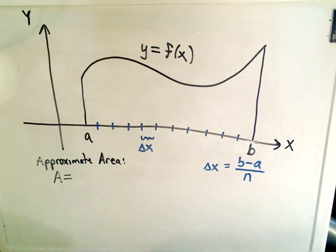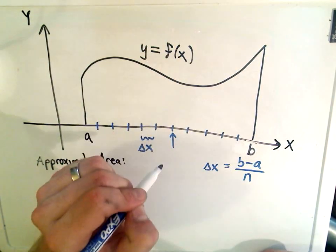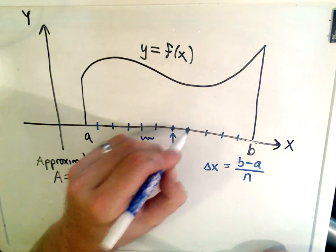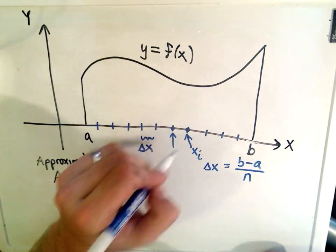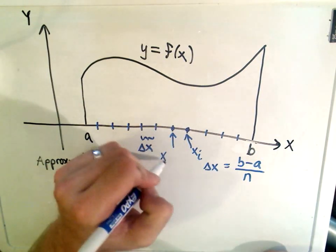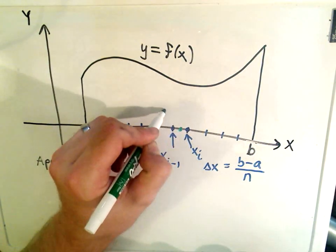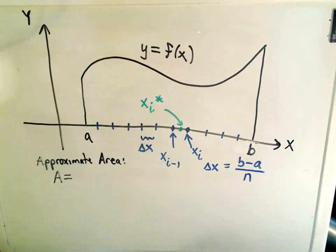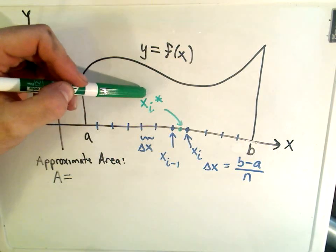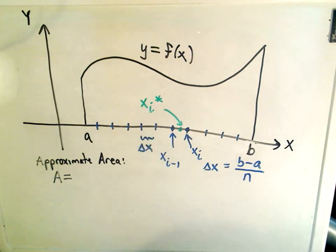The way we go about approximating the area — let me label some things. Here's some generic x-coordinate, and there's the one after it. I'm going to call this point x sub i, and the one previous to it x sub i minus 1. If we take any point inside that particular interval, we'll label that point as x sub i star. The star just kind of represents that this point is in the ith interval — whatever interval it is, the first, second, third, fourth, the ith interval.